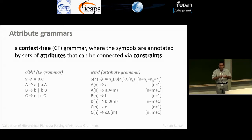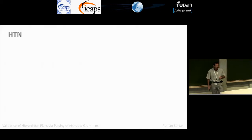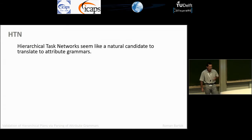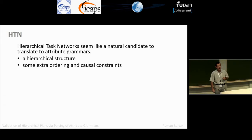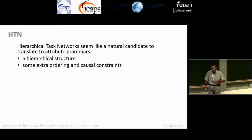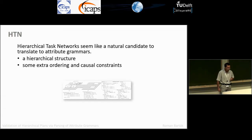Those who know how the context-sensitive grammar looks for this language will know it's not natural. But with attribute grammars, we keep the same simplicity of context-free languages. We suggested using attribute grammars to model HTN — it's a natural candidate due to the hierarchical structure. But HTNs have additional constraints that cannot be covered by context-free languages. We know formally that the language generated by HTN is not context-free, and now we know that attribute grammars are enough to model this.